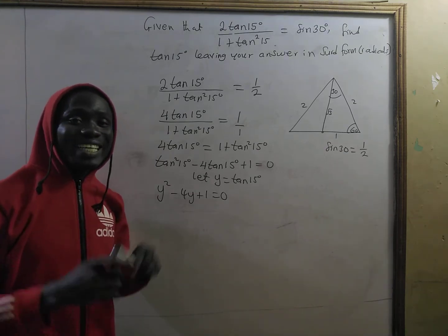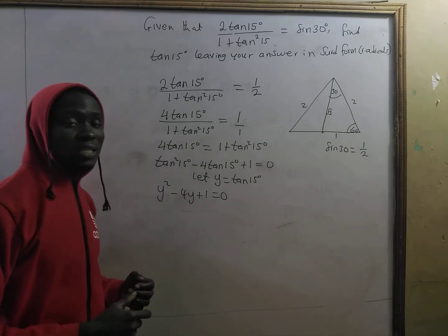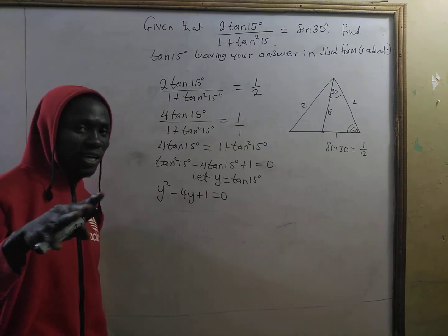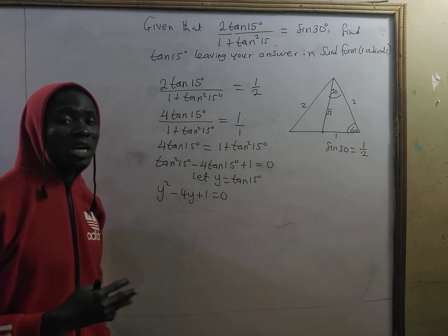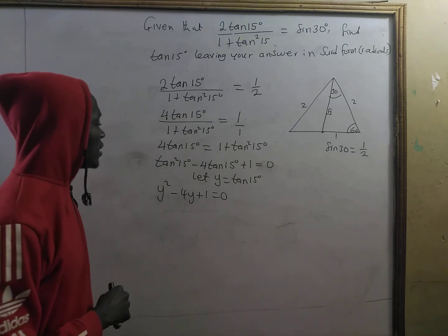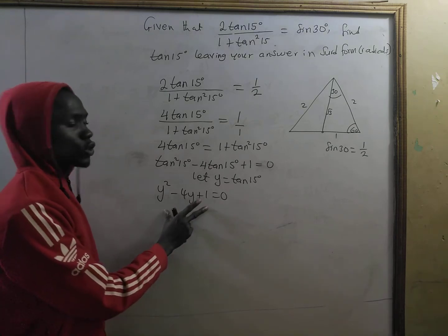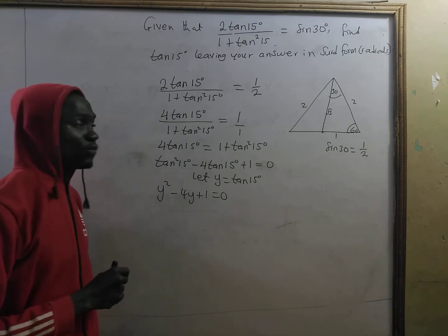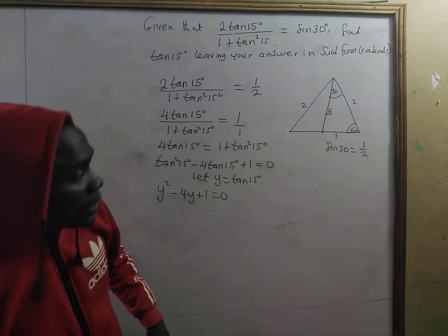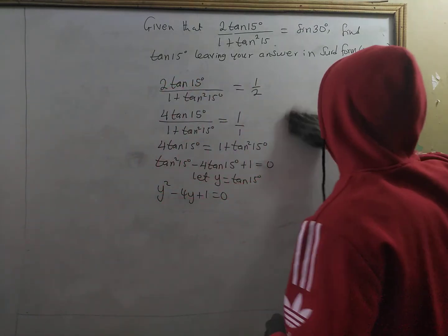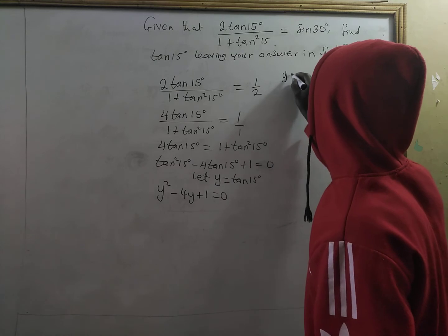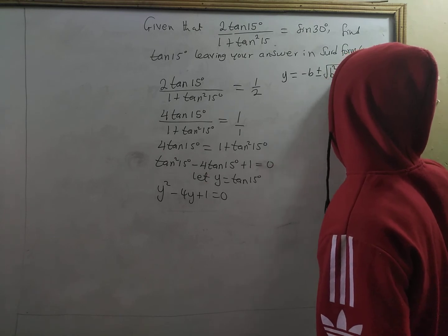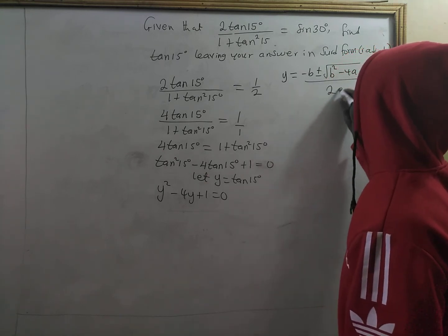Mathematics relies on logic and creativity, so this is a simple and highly creative approach. We can solve this using completing the square or using the quadratic formula. Let's use the quadratic formula: y equals negative b plus or minus the square root of b squared minus 4ac, all divided by 2a.